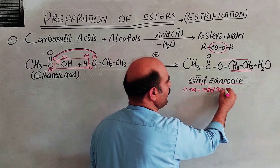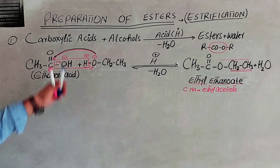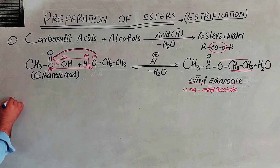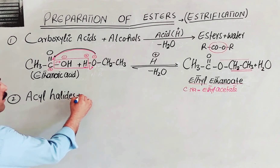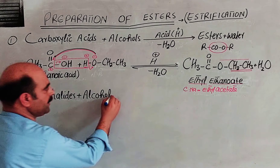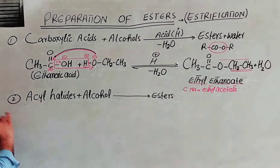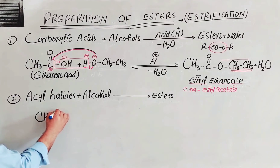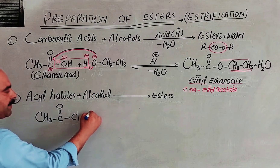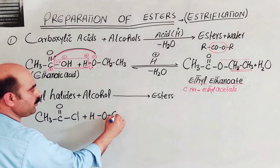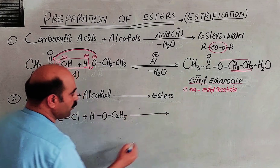Now we are starting the second preparation method. The second preparation uses an acid chloride, which is an acid halide. If you want to use alcohol in this reaction, using an acid chloride such as CH3C(=O)Cl, acetyl chloride, reacting with ethanol C2H5OH, the demonstration gives C2H5, two carbons and five hydrogens in the product ester.